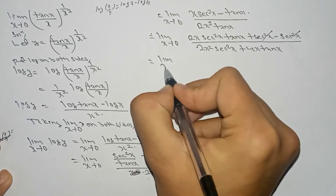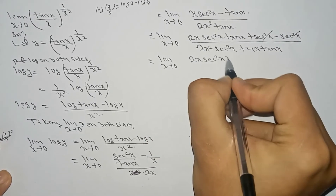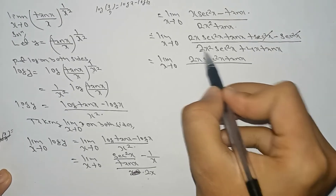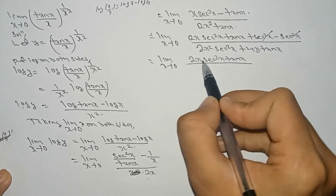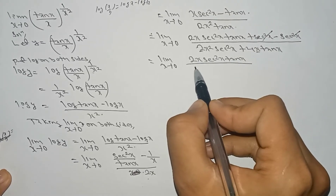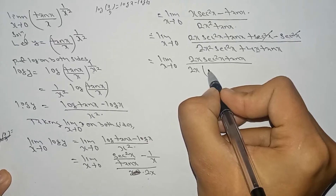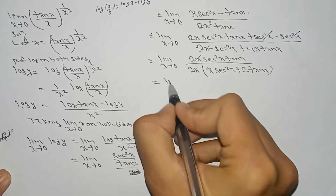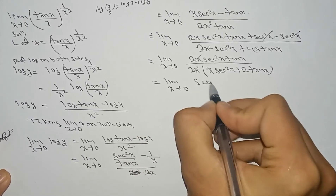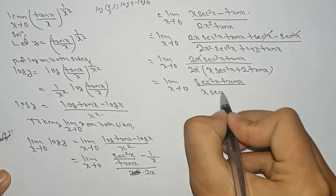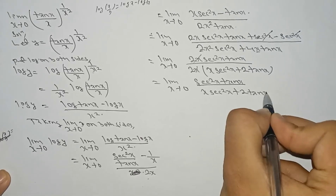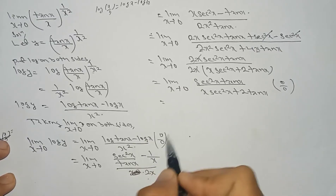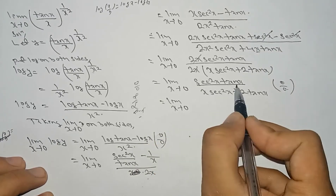Here the sec²x in the numerator and one sec²x cancel out, leaving limit x tends to 0 of (2x·sec²x·tan x) divided by (2x²·sec²x + 4x·tan x). Taking 2x common in the denominator, the 2x cancels, leaving (sec²x·tan x) / (x·sec²x + 2·tan x). This is still in the 0/0 form.